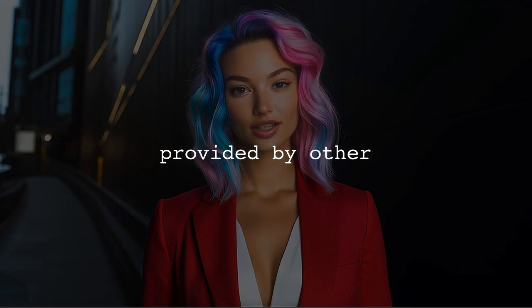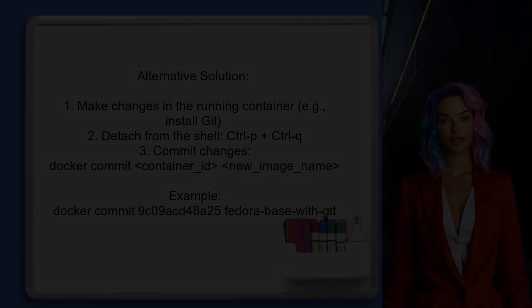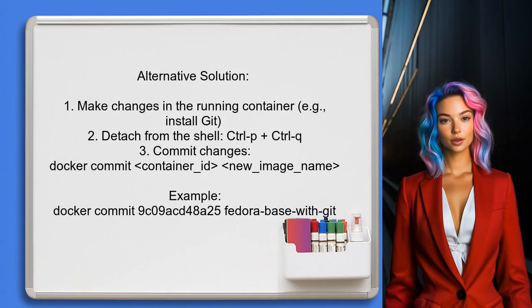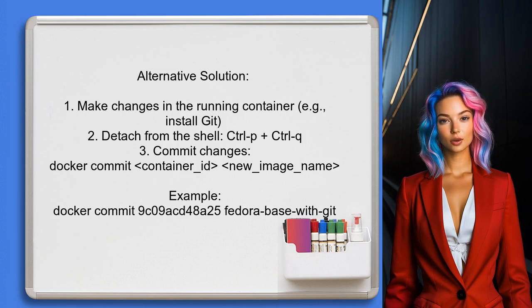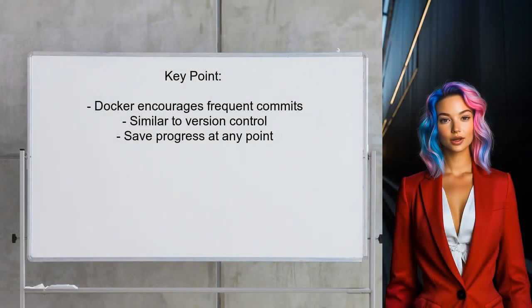Let's look at the answers provided by other users. An alternative approach shared by a user involves making changes to a running container before committing it. They suggest installing Git in the container. After making the changes, you can detach from the shell without exiting using Ctrl-P and Ctrl-Q. To save your changes, use the docker commit command followed by the container ID and the new image name. The user emphasizes that Docker encourages frequent commits, similar to version control, allowing you to save your progress at any point in the container's history.